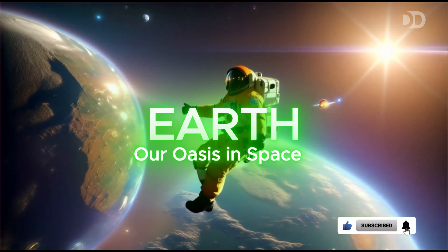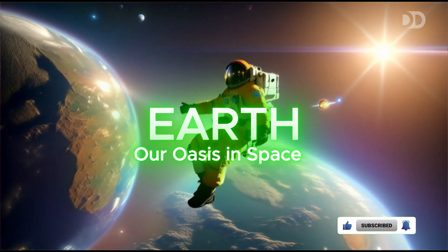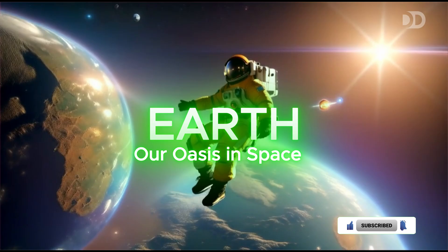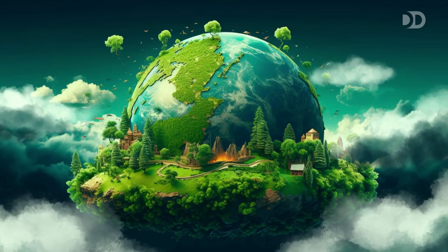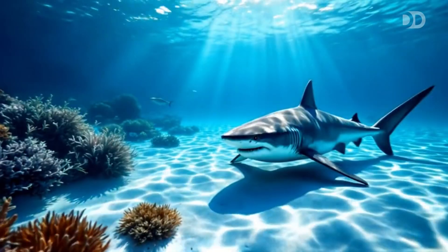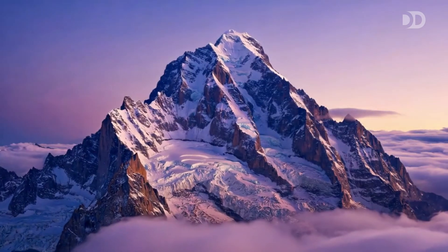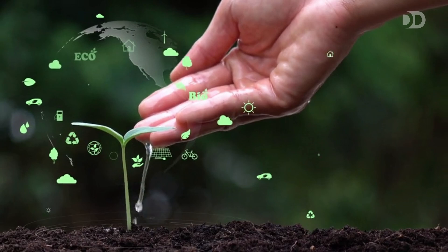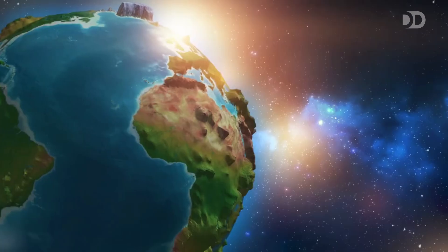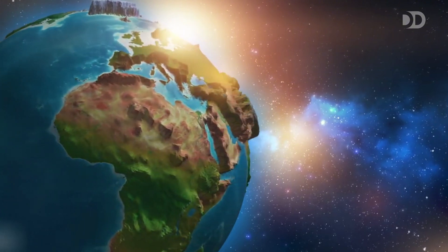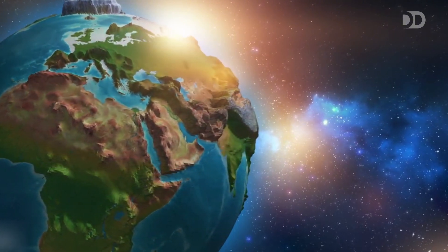Now, we arrive at Earth, our vibrant blue oasis in the cosmos. Earth is unique. Its temperate climate, abundant water and protective atmosphere nurture an incredible diversity of life. From vast oceans to towering mountains, every ecosystem is part of a delicate web. Seen from space, Earth's beauty and fragility are undeniable. It's a reminder to cherish and protect our only home. Let's continue our journey outward.